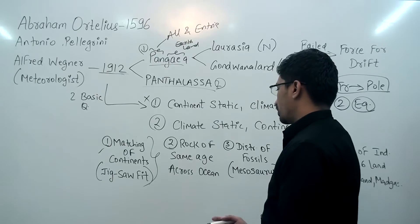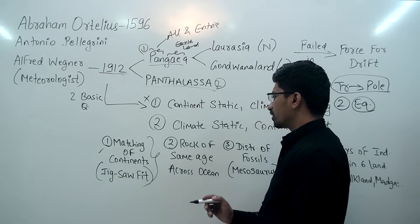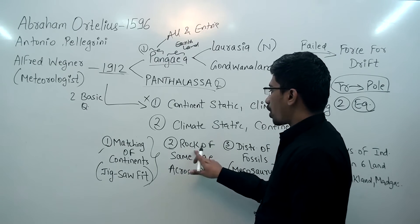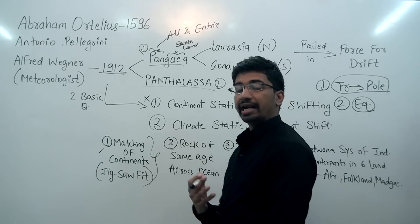Another proof is rocks of the same age found across different oceans, identified using the radiometric method, confirming that landmasses on opposite sides of oceans were once connected.